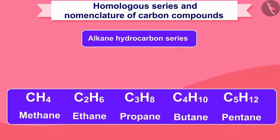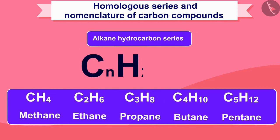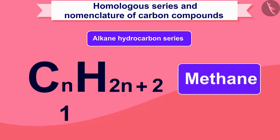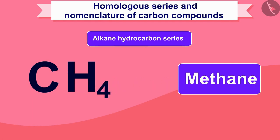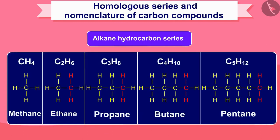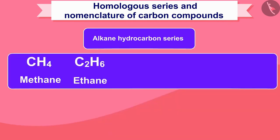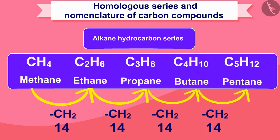We can represent any compound of this category by the formula CnH2n+2. For example, in the first compound of the series, methane, N will be 1. If we write 1 instead of N in this formula, we will get the molecular formula of methane, CH4. All carbon compounds in this category belong to a single bond, and so 'ane' will be added at the end of the name, such as methane, ethane etc.